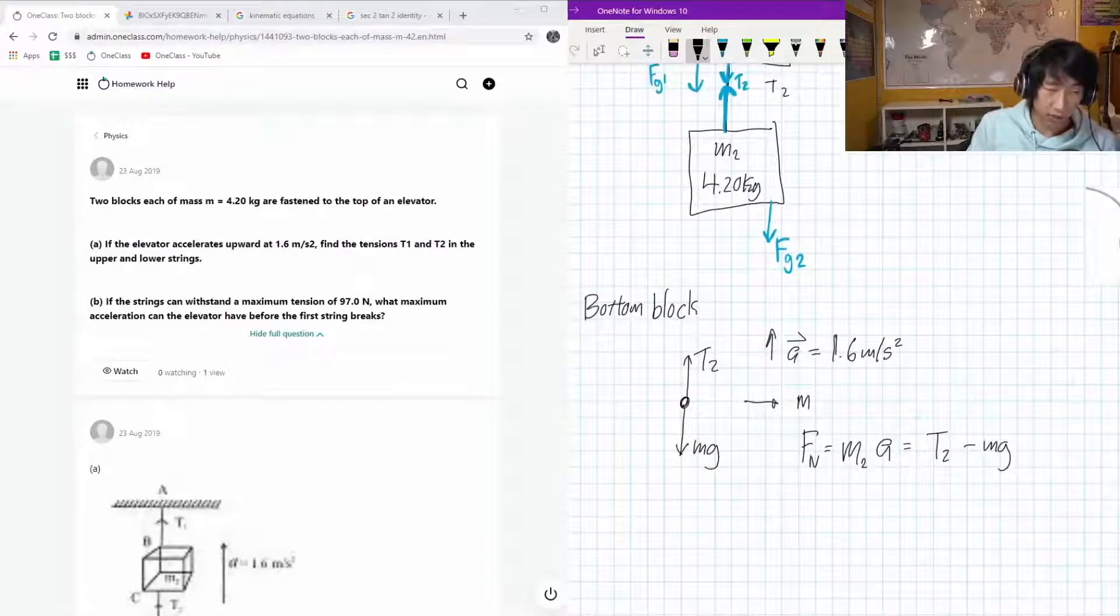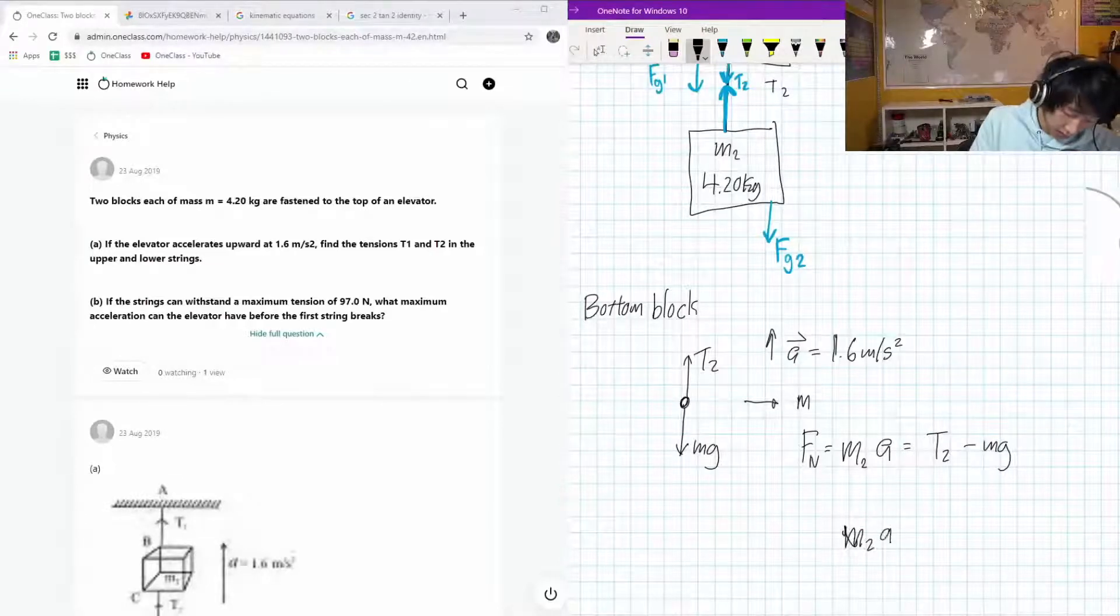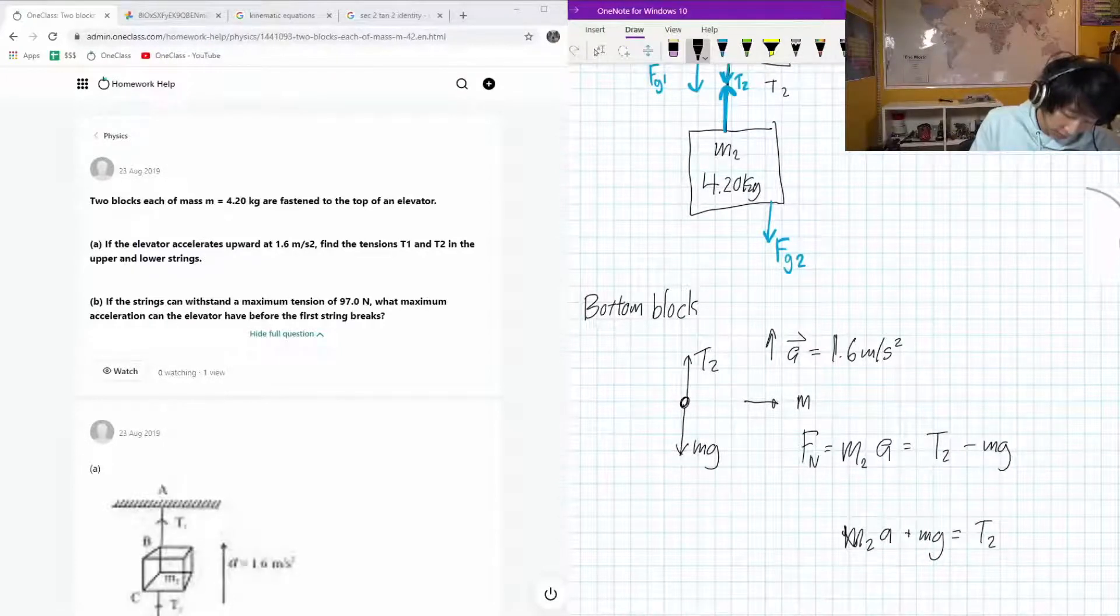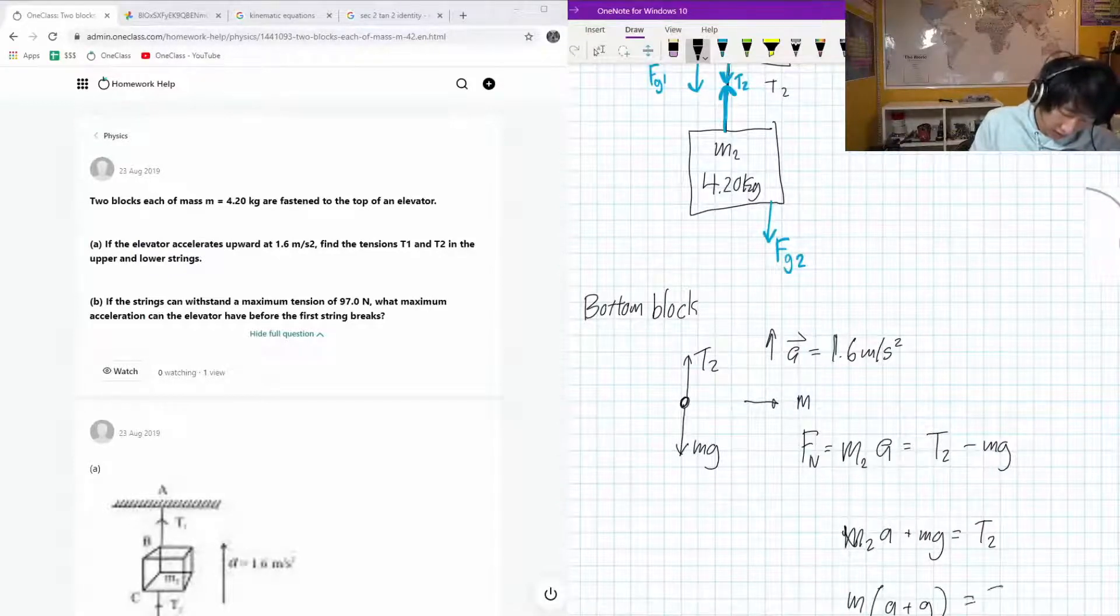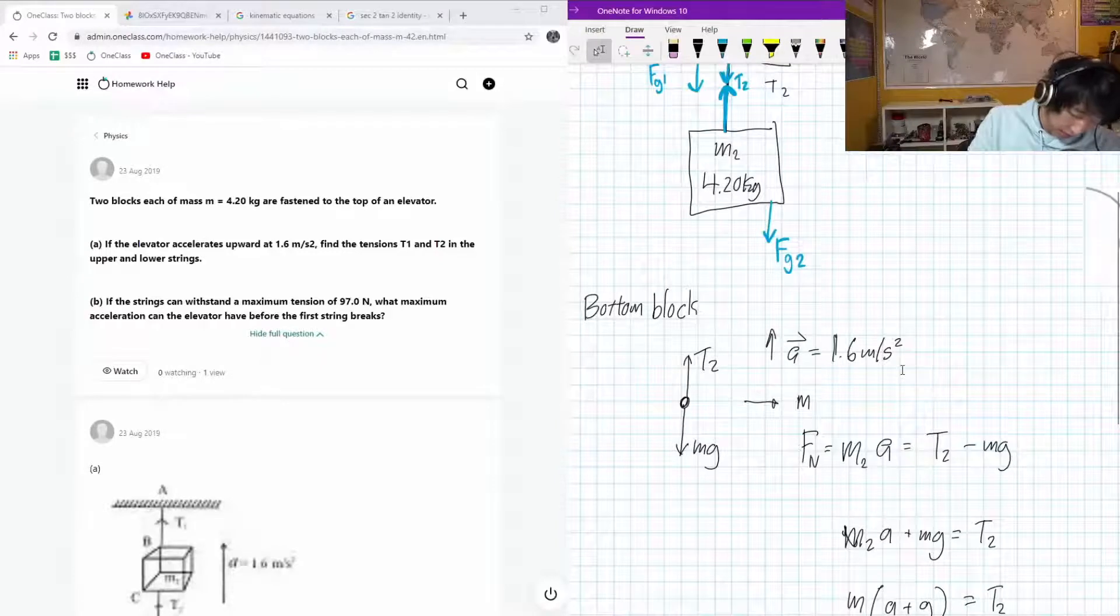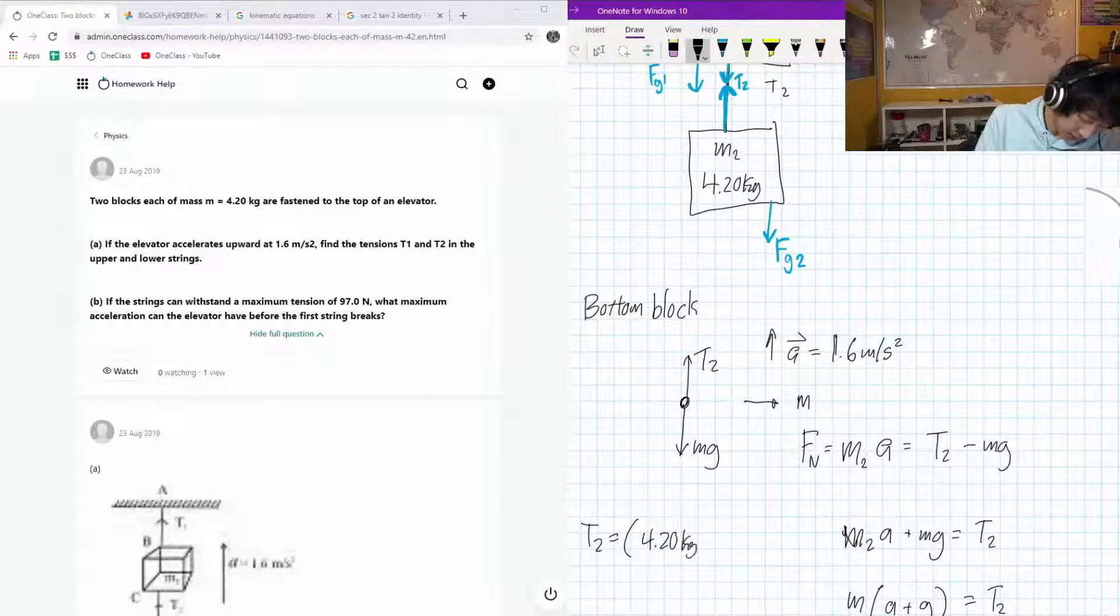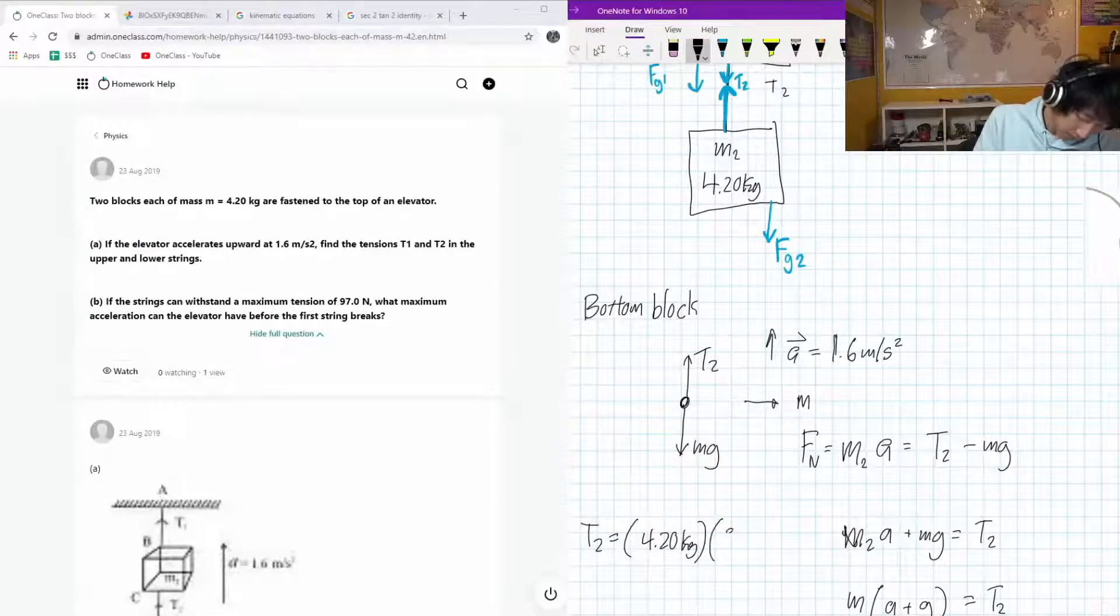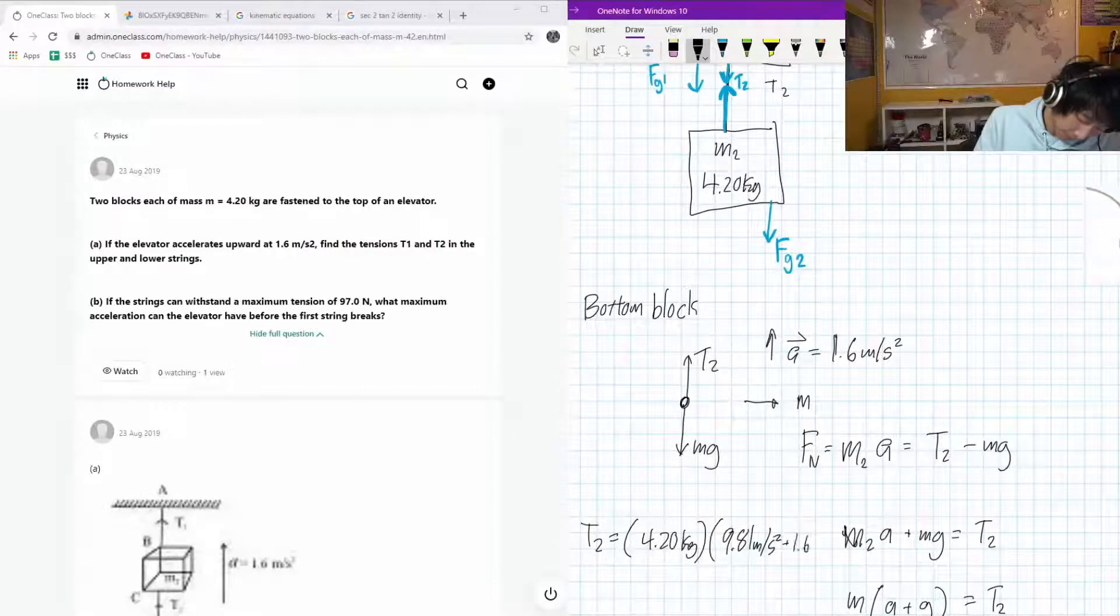Okay, so to solve for this, we're trying to solve for T. So that's just going to be m2a plus mg is equal to T2. Factoring, those m's are the same. So that's going to be m times a plus g is equal to T2. Subbing in the numbers, we have T2 is equal to mass is 4.20 kilograms, times 9.81 meters per second squared plus 1.6 meters per second squared.